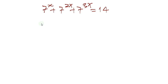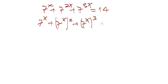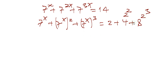Let's start solving this problem. What I'm going to do here is write this as 7 to the x, plus 7 to the x squared, plus 7 to the 3x — which is the same thing. And then I'm going to write 14 as 2 plus 4 plus 8. As you can see, 4 is 2 to the power of 2, and 8 is 2 to the power of 3.